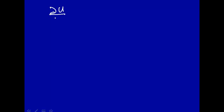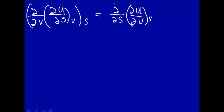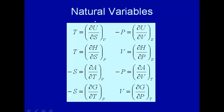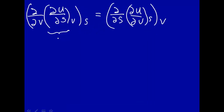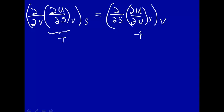How u changes with the first variable s at constant v, and then how that quantity changes with the second variable v at constant s — we are going to switch the order of differentiation. We take the derivative of v first at constant s, and then take the derivative with respect to s at constant v. From the last lecture, how u changes with s at constant v is temperature. And how u changes with v at constant s is minus pressure.